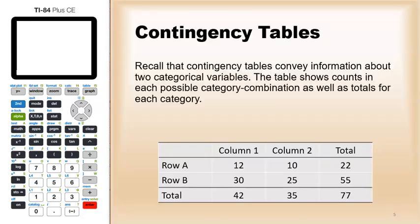Recall that contingency tables convey information about two categorical variables. In this case on the screen, there's the rows, row A and row B, and the other variable would be the difference in the columns, column 1 and column 2. The table shows counts of each possible category combination, each combination of row and column, as well as the totals for each category.